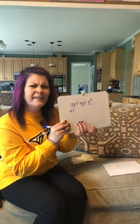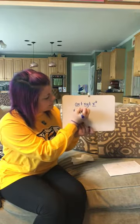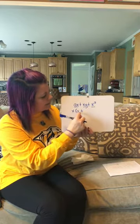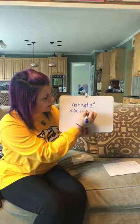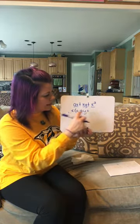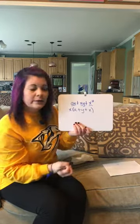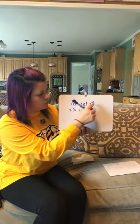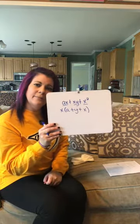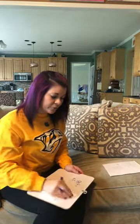So I take out an x. In the parentheses: ax divided by x leaves just a; xy divided by x leaves just y; and x squared divided by x leaves just x, because I only took out one x. So the factored form is x(a + y + x). That is how you factor using the greatest common factor — you just look for what all terms have in common.